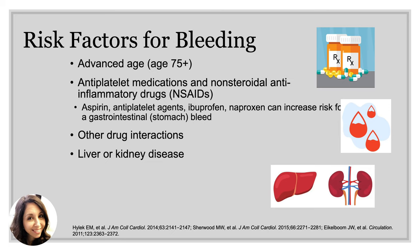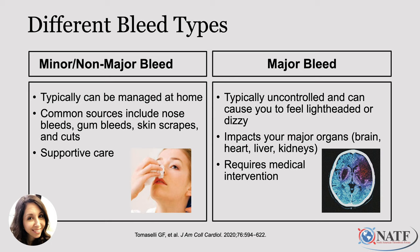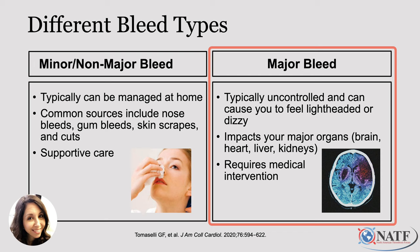You should also have your labs checked at least annually just to make sure that your liver and kidneys are functioning properly. Anemia is another risk factor for bleeding, as well as cancer and a history of a prior bleed. It's also important to note that not all bleeds are created equal, and the majority do not require full and immediate reversal of anticoagulation. Most patients on long-term anticoagulation will experience a non-major or minor bleeding event at some point. These can typically be managed at home with basic supportive care, and include things like nosebleeds, gum bleeds, and skin scrapes. Major bleeds, on the other hand, are typically uncontrolled and unable to be managed at home.